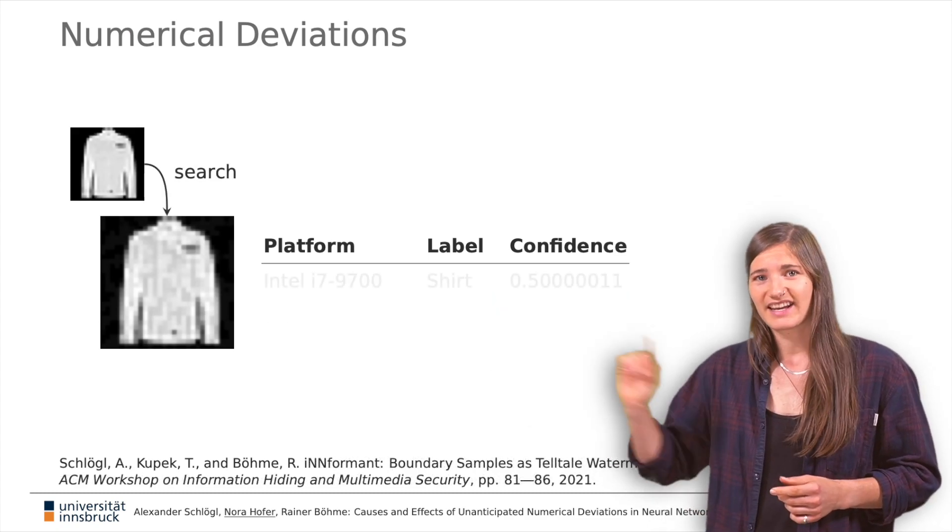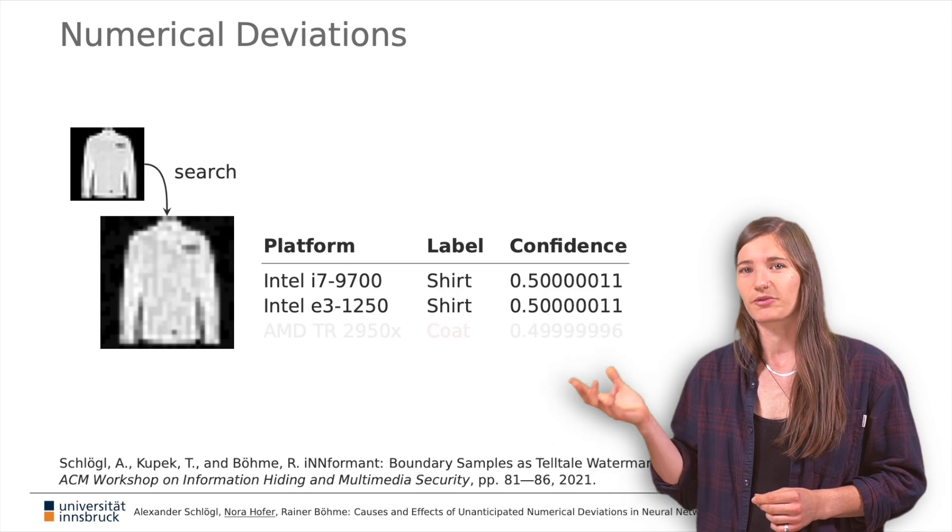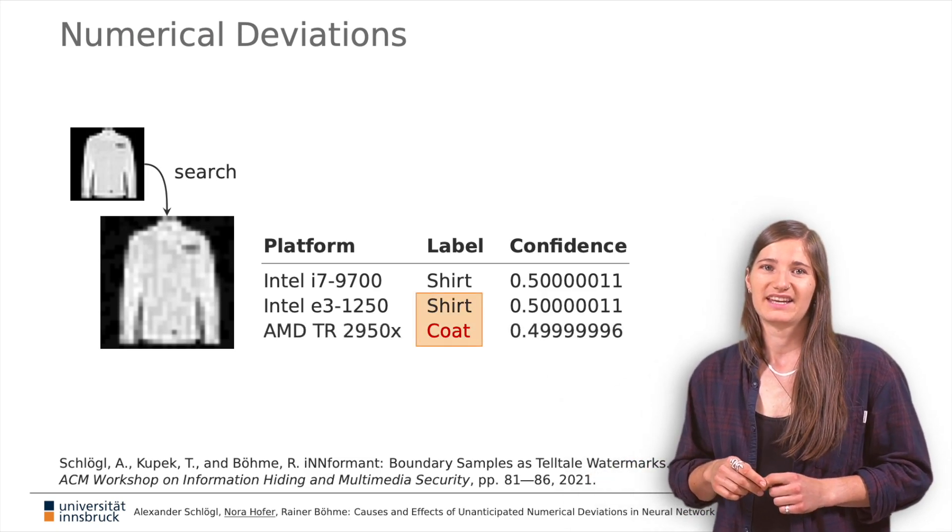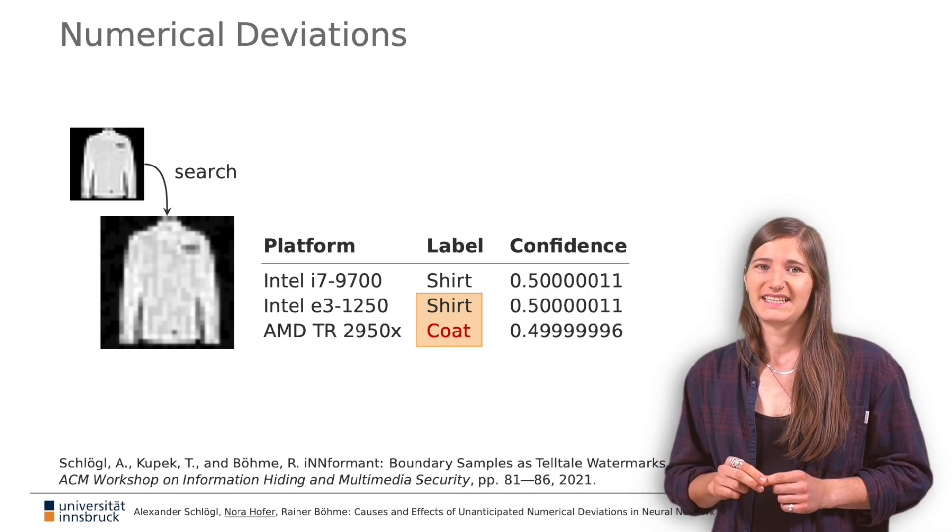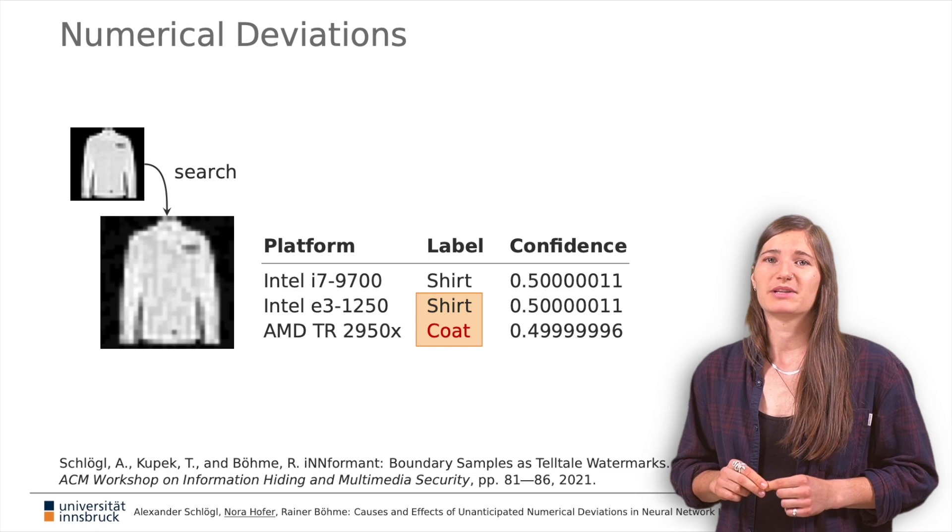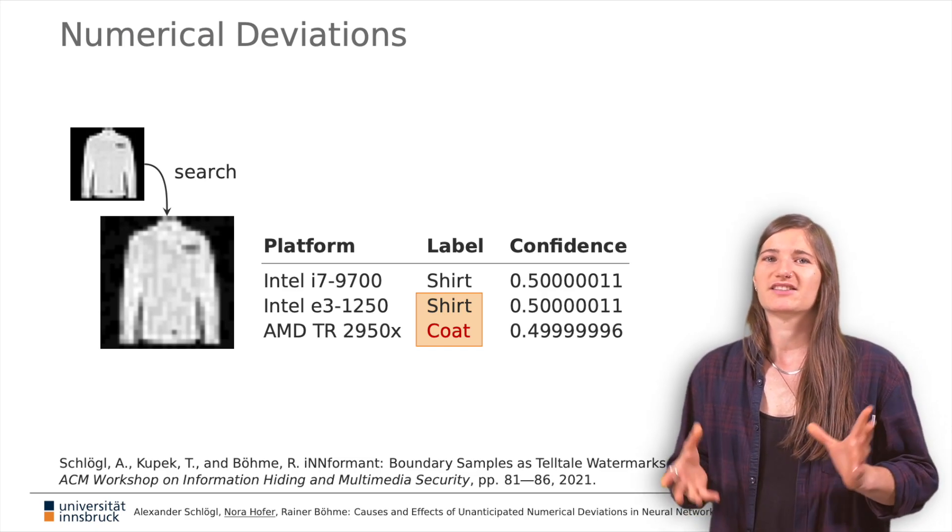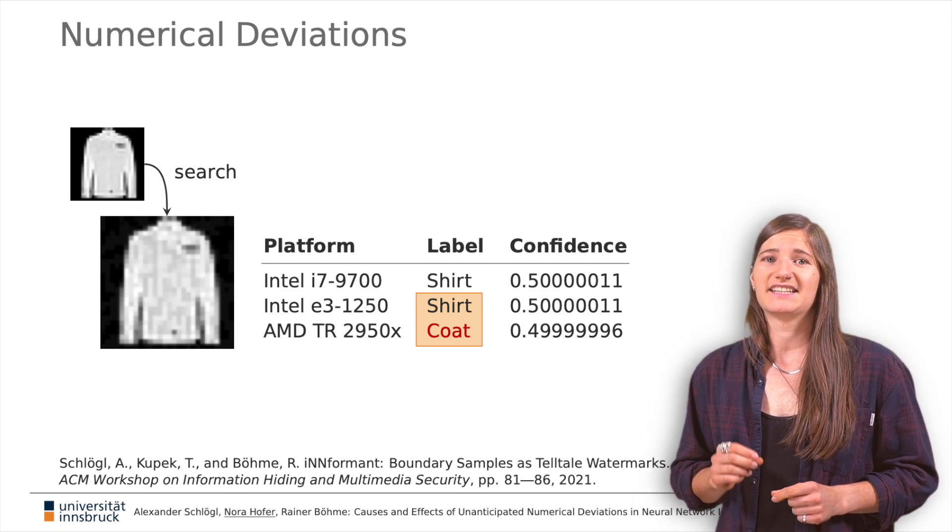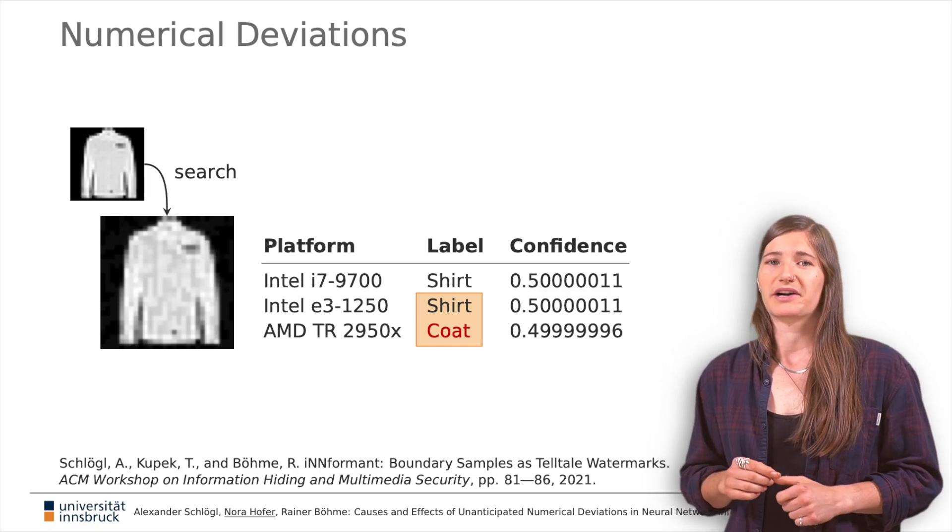However, it is possible to craft input samples that are classified to one label on one platform and to a different label on another platform. This is surprising and also somewhat worrying. Initial evidence has been published in the signal processing and forensic community, but the study was limited to a handful of CPUs. It did not consider GPUs and it did not yet investigate the causes and potential mitigations of the numerical deviations.